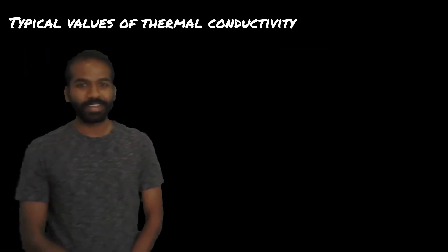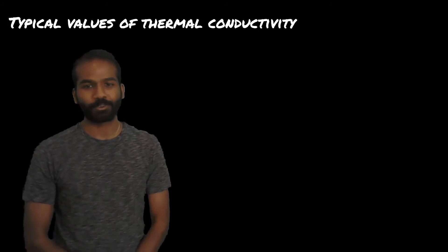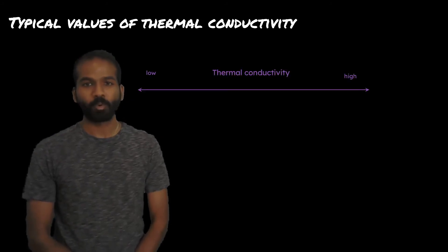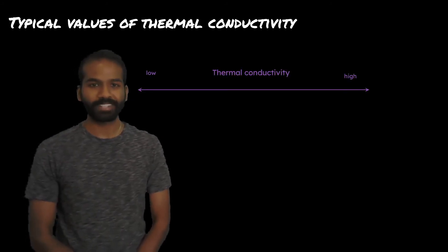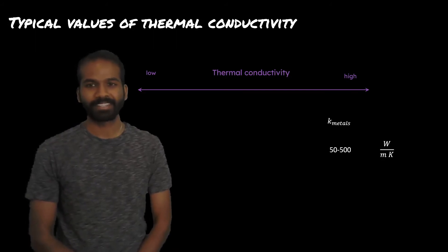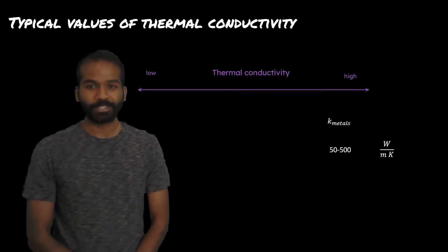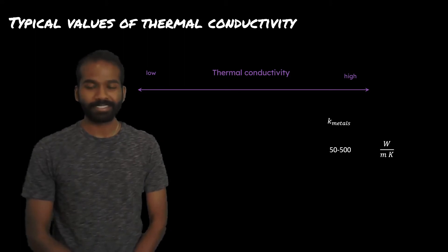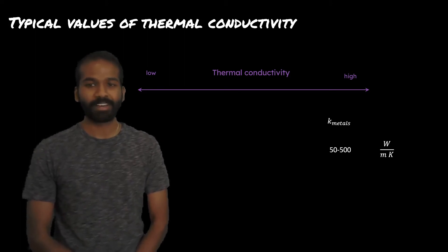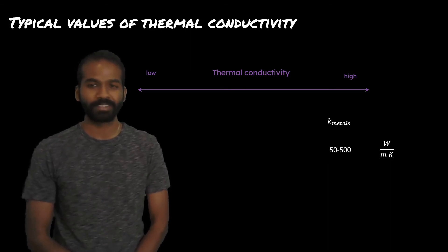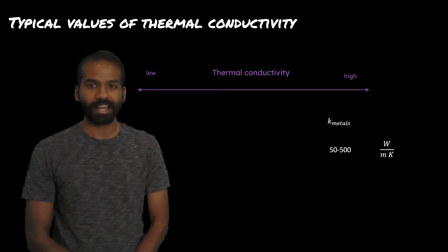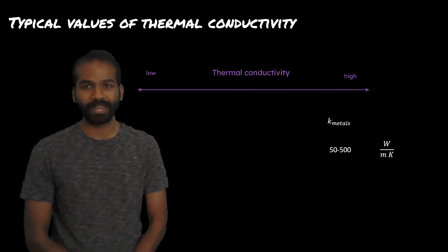Let's consider what are typical values of thermal conductivity. We will organize these from low on the left-hand side to high values on the right-hand side. Metals are among the materials we encounter on an everyday basis that have the highest thermal conductivity, with values typically of 50 to 500 watts per meter per kelvin. The motion of electrons in these materials is responsible for the high thermal conductivity of metals.